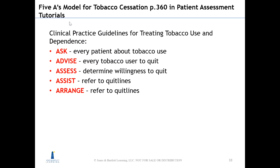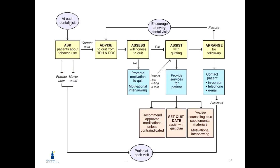The Ask portion refers to asking every patient if they use tobacco. Advise and Assess involves figuring out if a patient would like to quit. Assist means that if they want to quit, you refer them to quit lines. The Arrange portion is related to repeatedly following up and supporting the patient, because they need very active support. This flowchart from Chapter 32 of the Wilkins textbook illustrates the process.